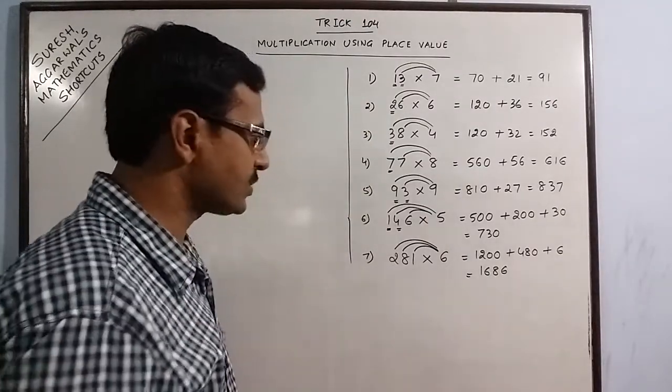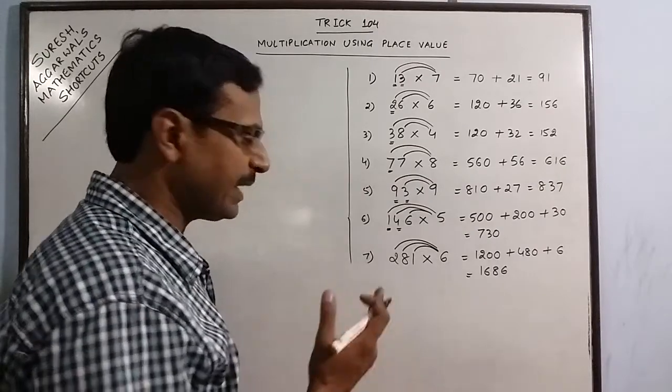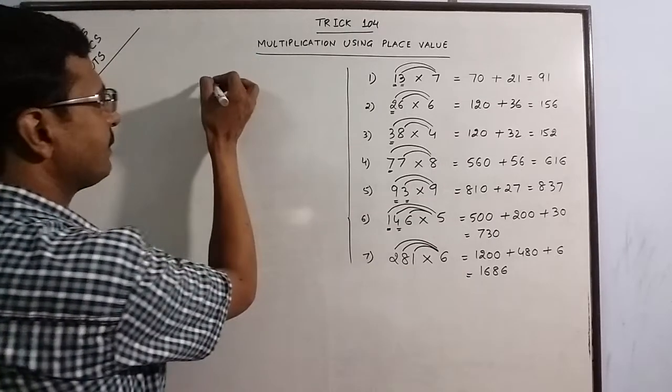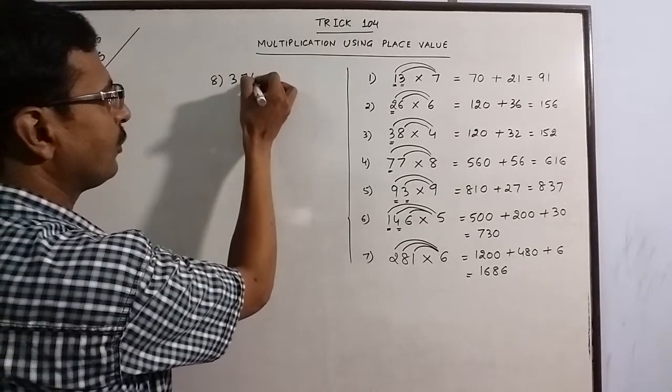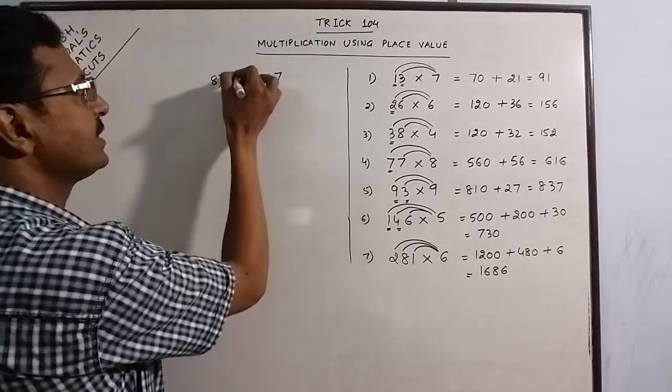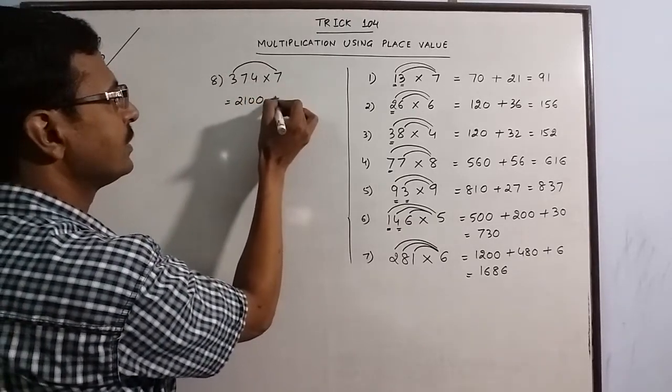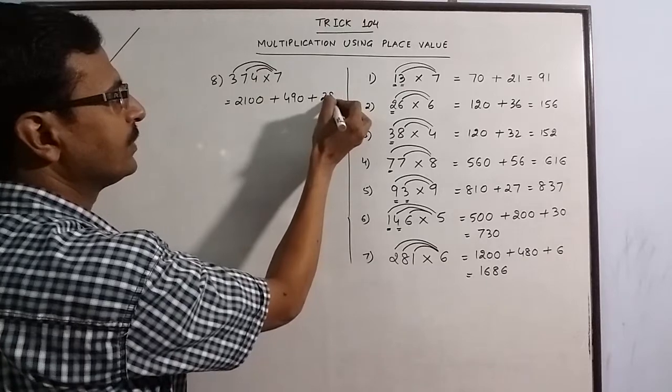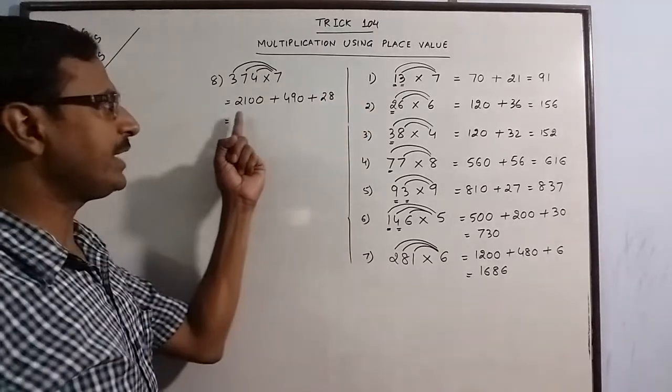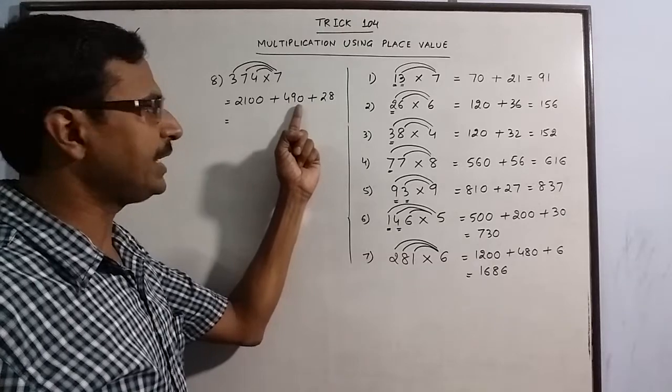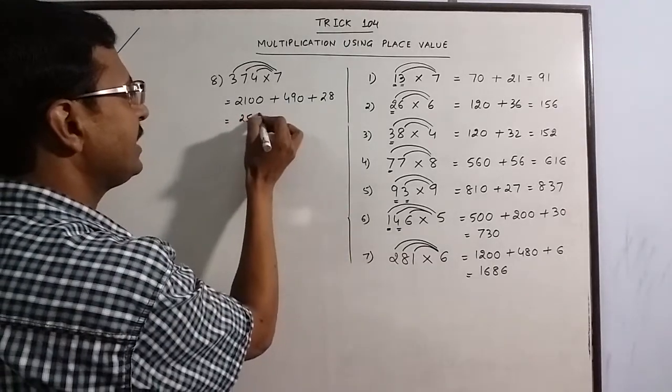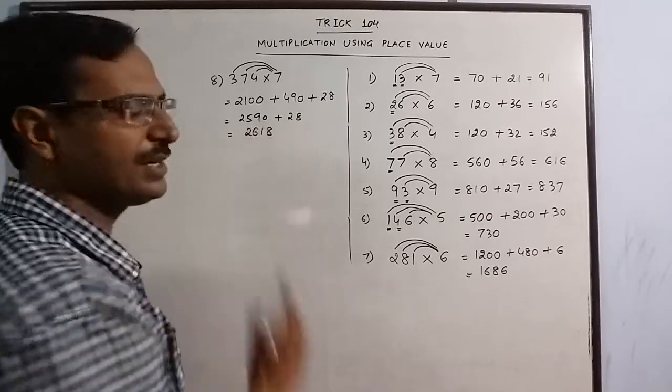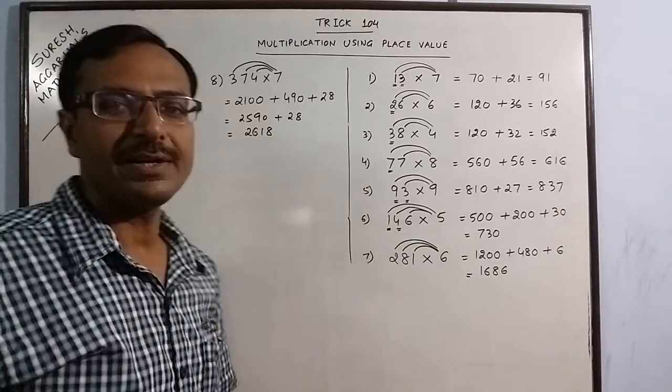Likewise, you can move on and solve a lot of problems using this place value of the first number. See more examples. Say we have 374 multiplied by 7. This is 3 7's are 21, put 2 zeros. 7 7's are 49, put 1 zero. 4 7's are 28. So if you add this 2100, 2590, so 2590 plus 28. So 2618 is the product of 374 and 7.